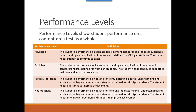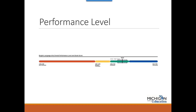There is a document on the M-STEP webpage at www.michigan.gov/mstep under the Reporting section, called M-STEP and MME Performance Level Descriptors, that provides information about all assessment performance levels. A sample of the performance levels as seen on the individual student level M-STEP reports shows scale score ranges for each performance level below the graph. Not proficient is shown in red, partially proficient in yellow, proficient in green, and advanced in blue.